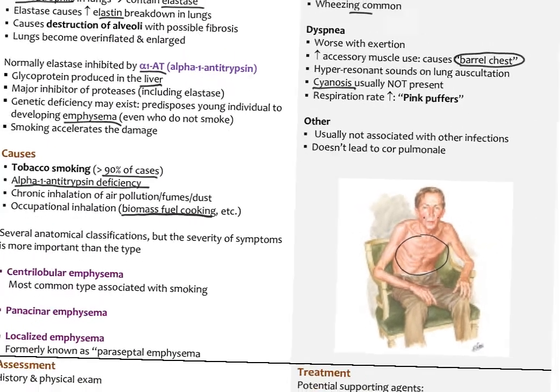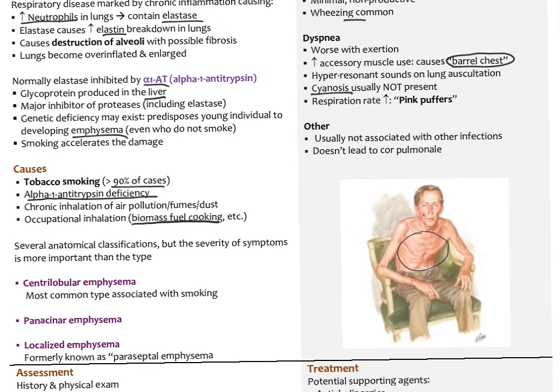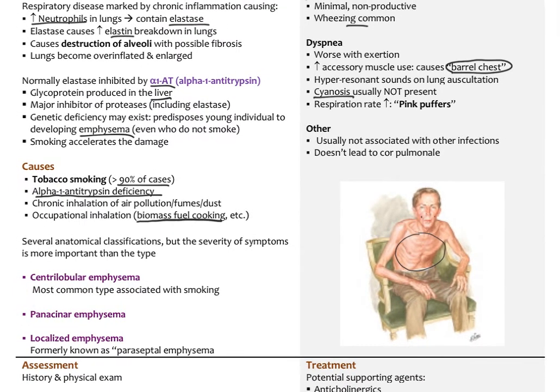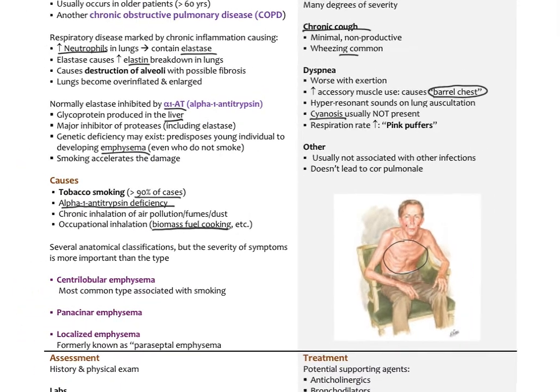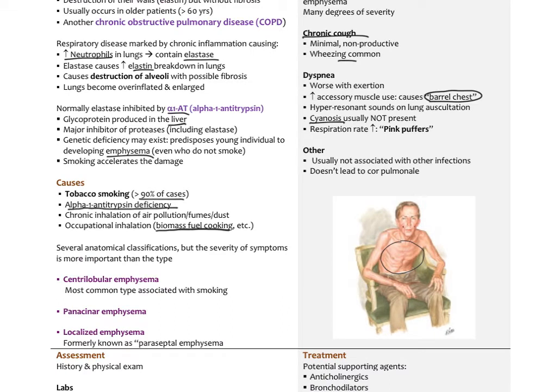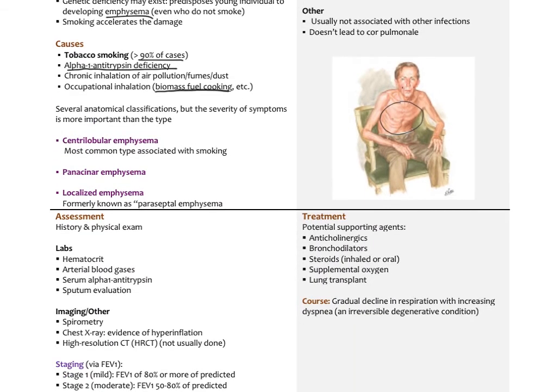Emphysema usually doesn't have secondary infections, and unlike chronic bronchitis, it is not correlated with cor pulmonale or right heart failure — which is why the classic blue bloater appearance with cyanosis and edema is not present here. There can be some mixture with chronic bronchitis, so these should be thought of as two polar opposite ends of a spectrum, with many patients falling somewhere in between.